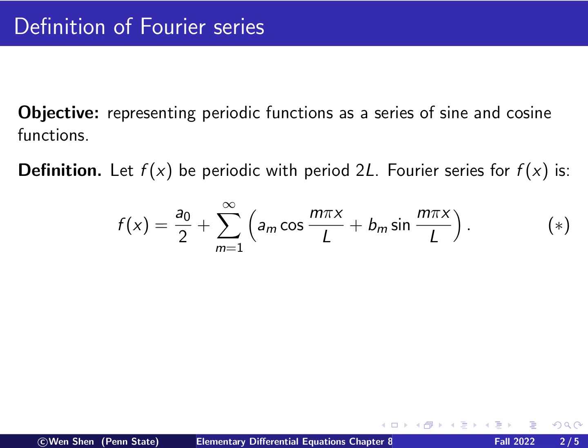Here's the definition. Let f(x) be a periodic function with period 2L. Then the Fourier series for f is: f(x) equals a0 over 2 plus a summation for m from 1 to infinity of am cos(mπx/L) plus bm sin(mπx/L). This summation here is an infinite series.